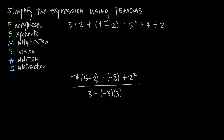One thing to know about PEMDAS is that this order is exact, but multiplication and division can be done at the same time. You can move left to right through your expression and do multiplication and division together. You can also do addition and subtraction at the same time. That's why we pair multiplication with division, and addition with subtraction. But otherwise: parentheses first, then exponents, then the multiplication/division group, then the addition/subtraction group.